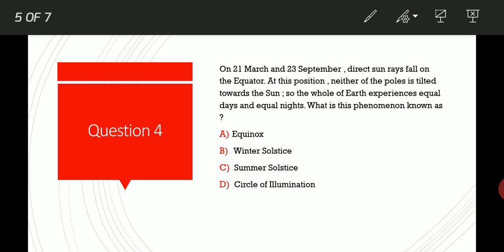Coming to the next question, Question 4. On 21st March and 23rd September, direct sun rays fall on the equator. Equator is a zero degree latitude that divides the earth into northern hemisphere and southern hemisphere. There are two types of imaginary lines: latitudes and longitudes. Latitudes are the lines which are through this way and longitudes are the longer lines which are like this. At this position, when the sun is in a straight position and the direct rays of the sun fall on the equator.